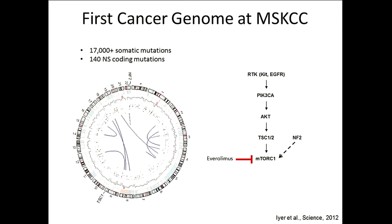When you do all that, it actually becomes obvious — and things that are probably right are always obvious in retrospect. It turned out the patient had a two-base pair deletion in TSC1, which causes a frameshift and early truncation. She also had a nonsense mutation in NF2. The reason these are interesting is because we already knew that loss of both of these alterations leads to activation of TORC1, which is the direct target of the drug.